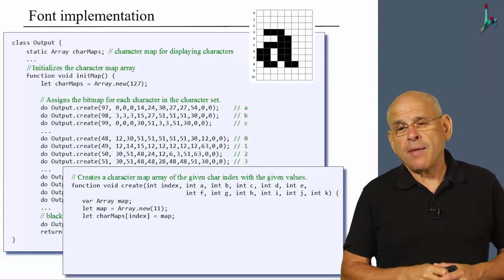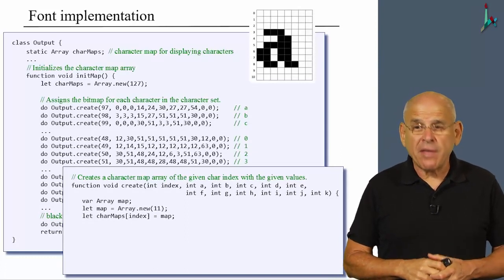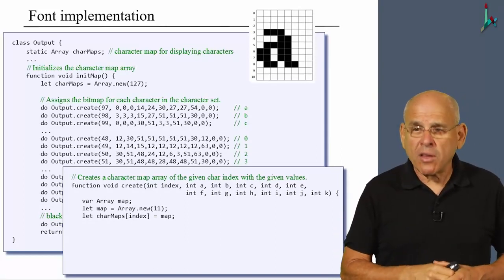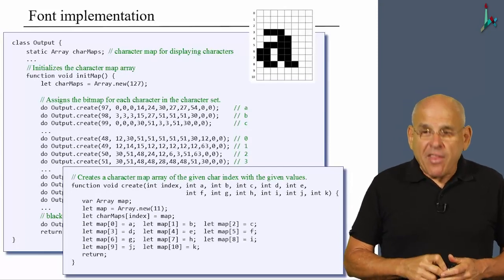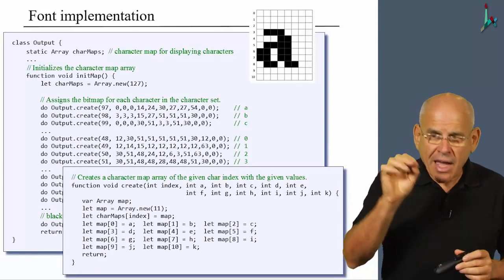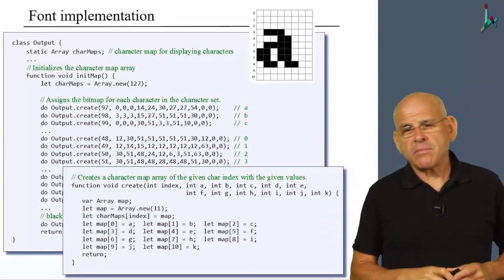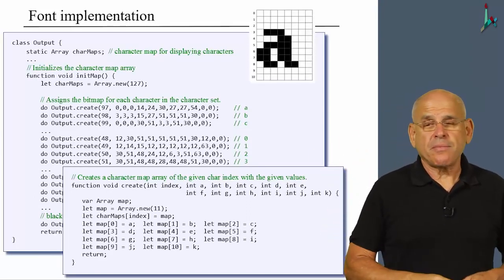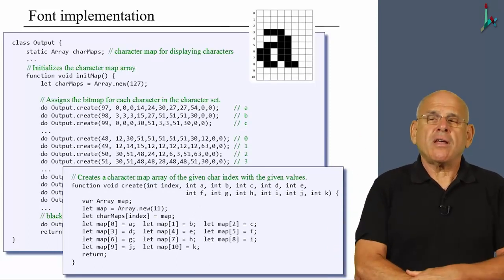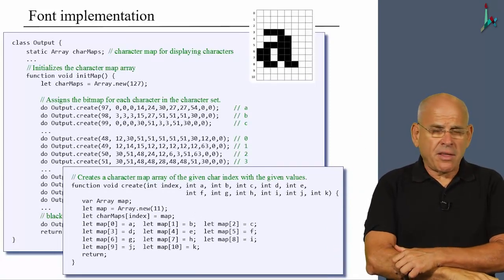So essentially, we are implementing a two-dimensional array. Now charMaps is the static array that holds all the bitmaps. And then we populate our little map array with the actual numbers, A, B, C, D, and so on and so forth, and return.